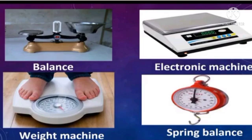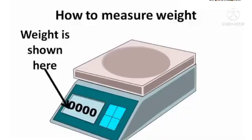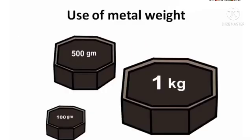There are different types of weighing machine. This is electronic machine. On the steel plate, object is kept and on the screen, you can see weight is shown. It is used in many shops and you might have also seen use of metal weight.